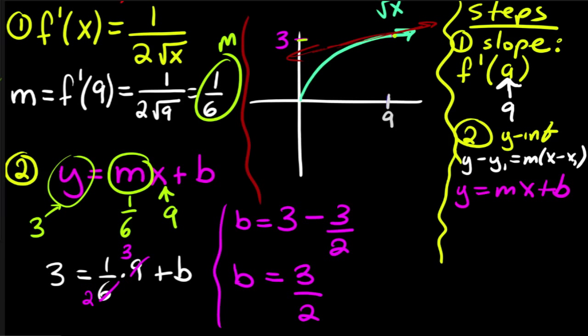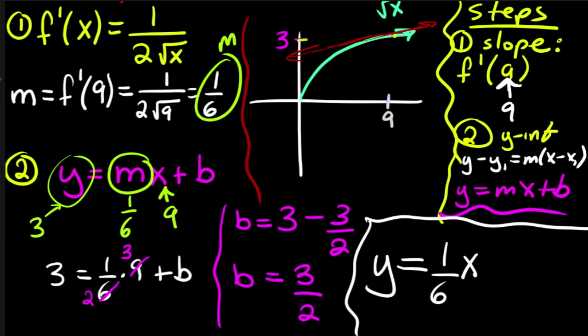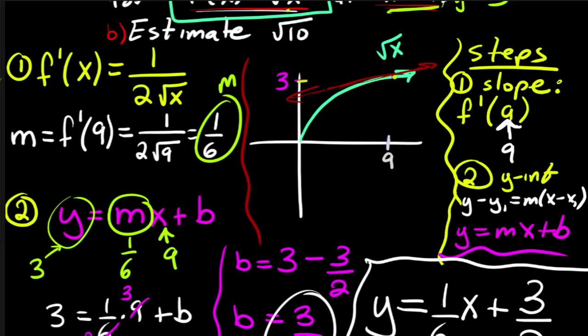Okay, so then my tangent line, let me erase this real quick. Then my tangent line is simply going to be y equals to my slope, which is up here, 1 sixth x, and then plus my y intercept, which is right here, 3 halves. So this is my tangent line, so this right here, 1 sixth x plus 3 halves, is the equation of this rough kind of line that I sort of drew right here.